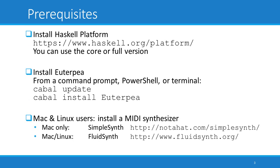Before using Euterpia, you first need to have installed Haskell. The easiest way to do this is with Haskell Platform. Go to the URL shown here and download the version appropriate for your operating system. You can use either the core or full version — it's up to you.